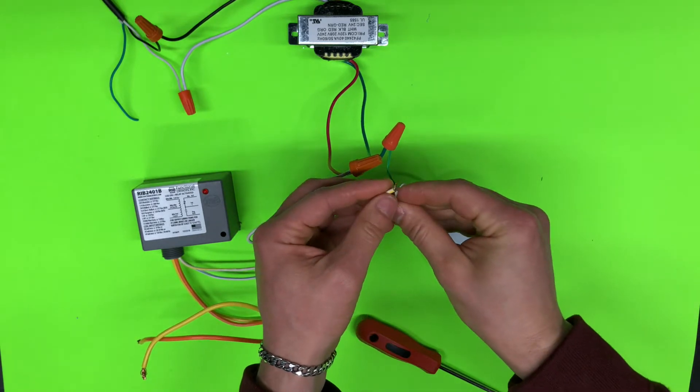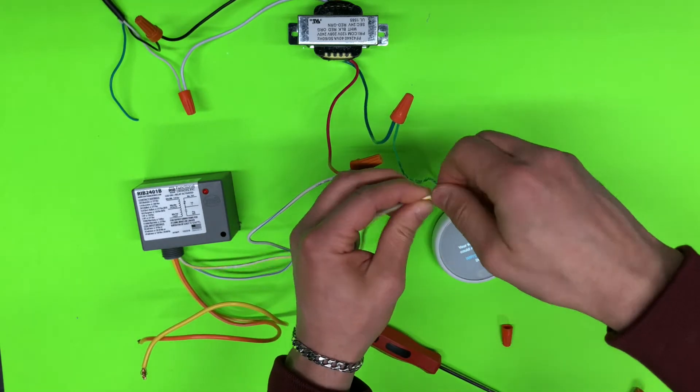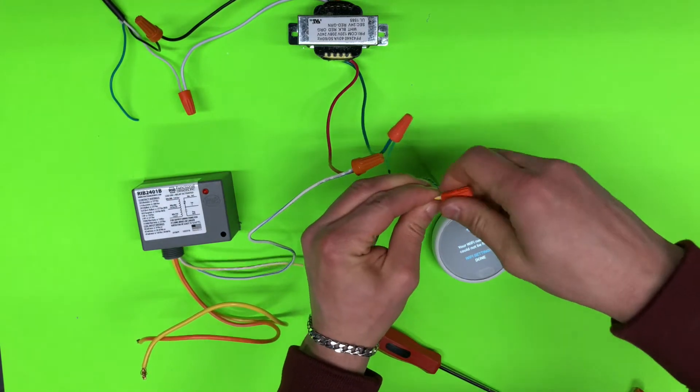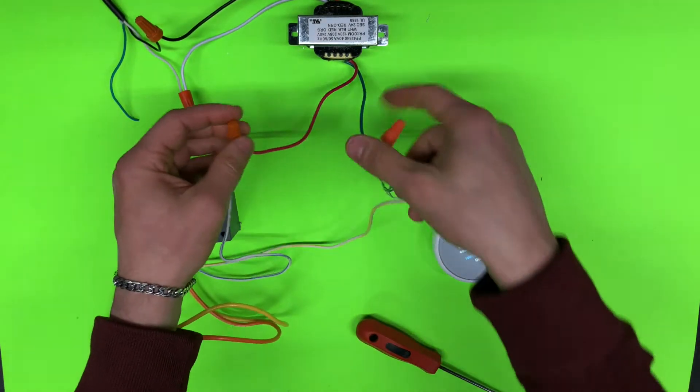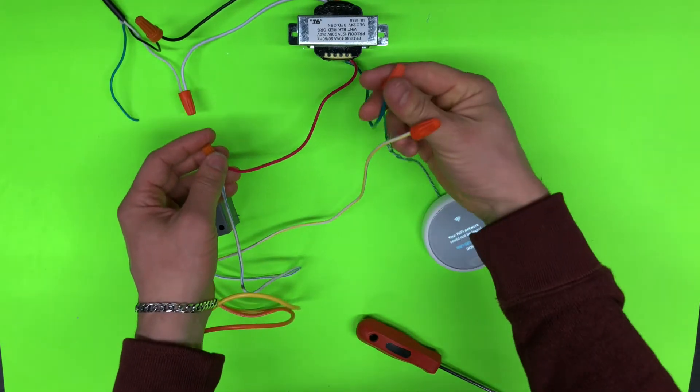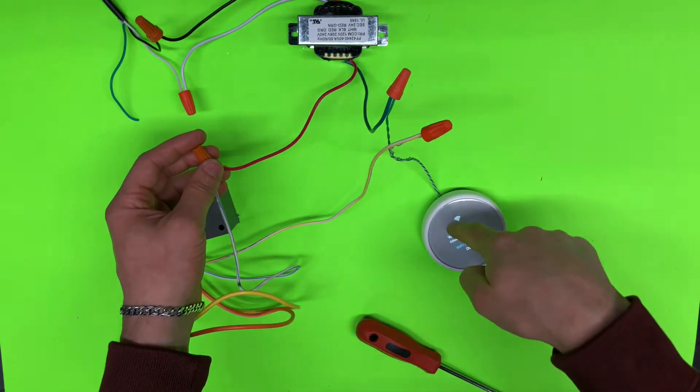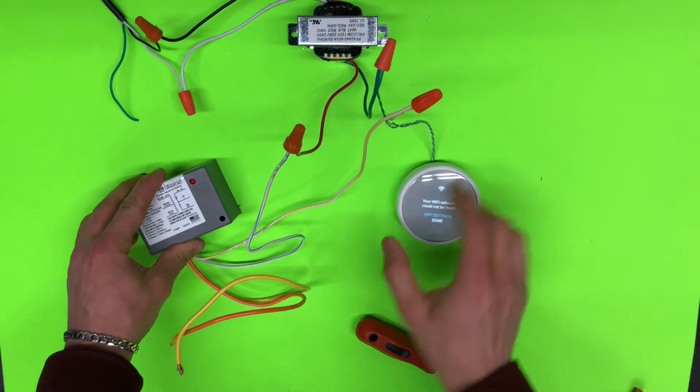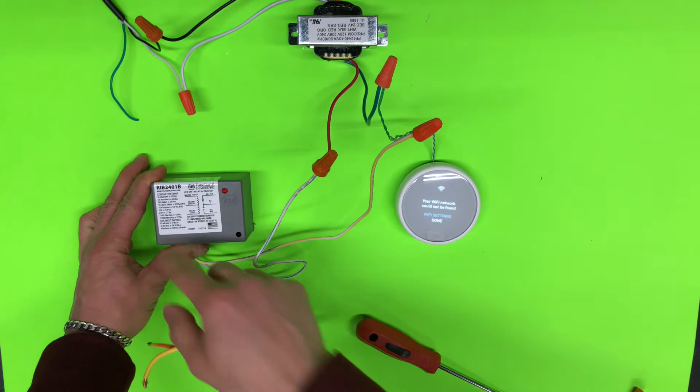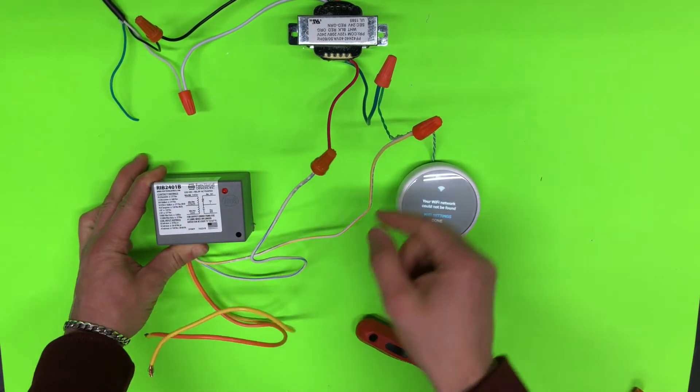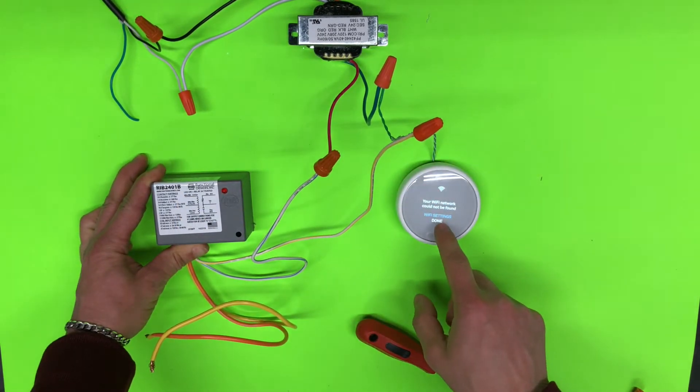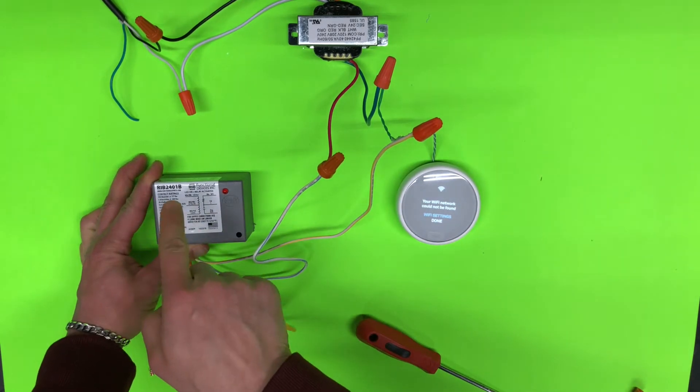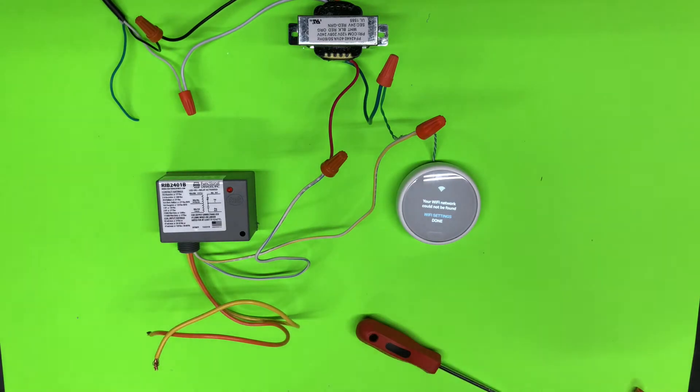So right now our thermostat is going to be connected in series. So that means here's our transformer, one power is going to thermostat and second power from transformer is going to relay. So thermostat will go through the coil and power itself. And when we need to send power, it's going to short these contacts and energize our relay. So let's turn power on and see how it works.